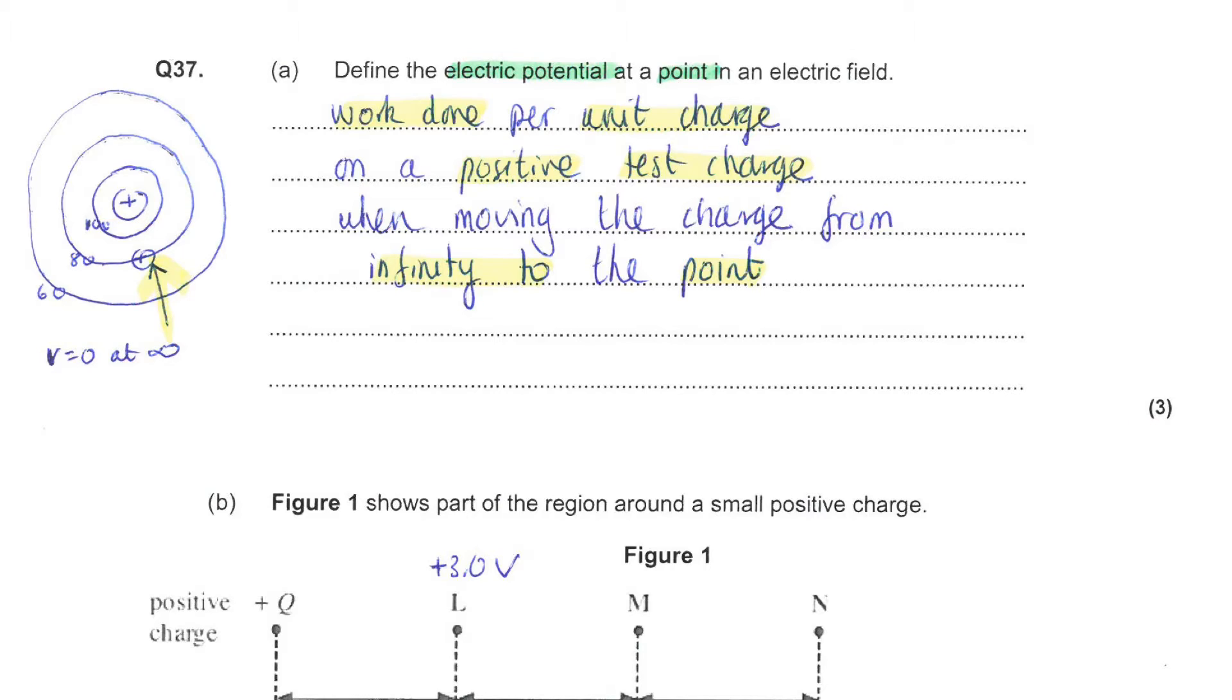Notice there are three marks allocated to your answer. So the first one is for making the point that it is defined as work done per unit charge. Secondly, to refer to a positive test charge. And the third mark for stating that this is the work done when moving the charge from infinity to that point.